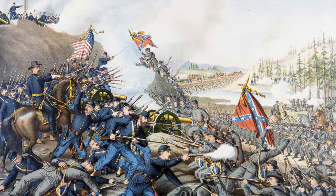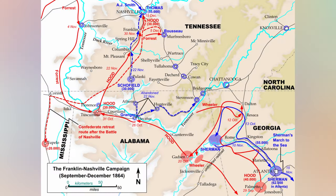The Battle of Spring Hill ended in a stalemate. Schofield, after fending off a Confederate attack, skillfully moved his army past the Confederates during the night. The Union forces assumed a defensive position at Franklin, setting the stage for the next chapter in this compelling story of the American Civil War.